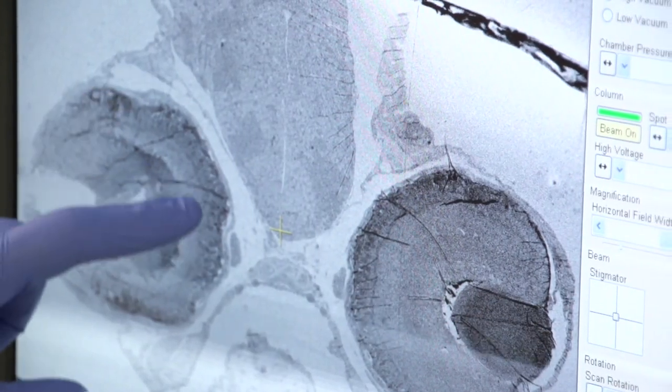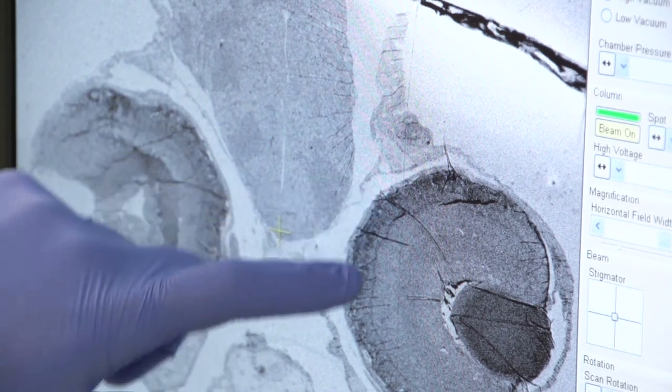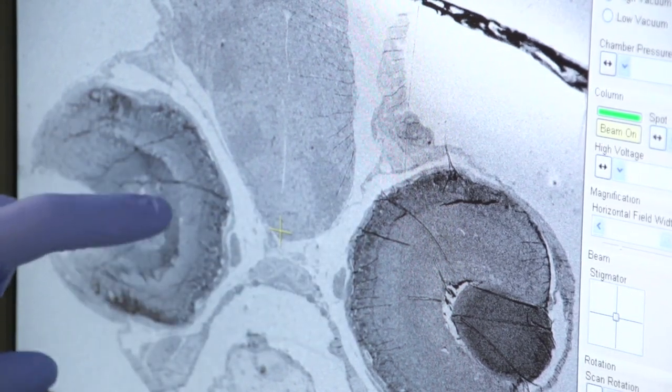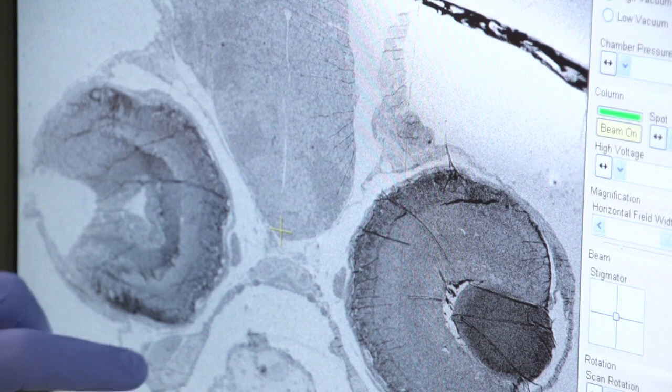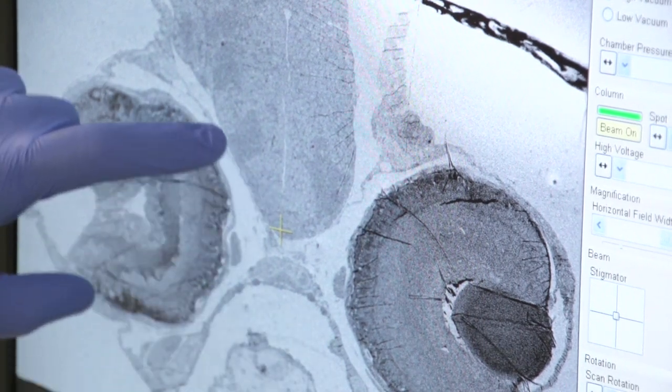These are the eyes. These are the retina, and the different layers, the photoreceptors, and then the deeper layers of the retina. This is the jaw, the mouth and the jaw. And up here is brain tissue.